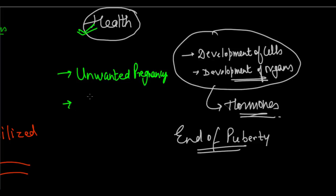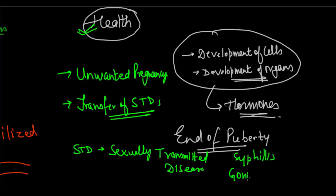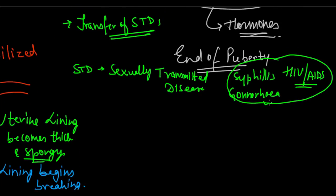Another major thing which can take place is the transfer of STDs — sexually transmitted diseases. Many diseases like syphilis, gonorrhea, HIV, and AIDS spread through sexual contact. Most of these diseases are very, very fatal. Youth are young and sometimes don't think of these repercussions, so unsafe sexual activity can lead to these diseases and ultimately the death of an individual — this is another repercussion of unthought-out sexual behavior.